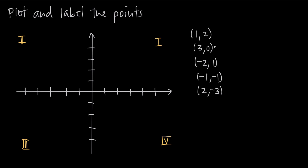You can think about the Cartesian coordinate system as two number lines, one for x and one for y, that are set at a right angle to one another. They're perpendicular — they're at 90 degrees.